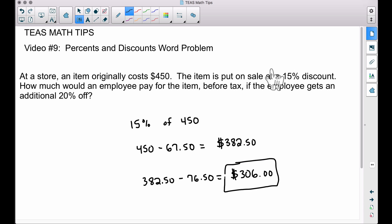So be very careful here. Do not add the 15% and 20% and assume that you're taking 35% of the 450. That is not how this problem works. You find 15% first. That's what we did here. We subtracted it from 450.